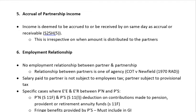In terms of Section 25H(5), any income is deemed to be accrued to or received by a partner on the same day as accrual or receipt — this is irrespective of when the amount is actually distributed to the partners. So any amount that is accrued to or received by a partner needs to be recorded and forms part of their income, regardless of whether they actually received this money.